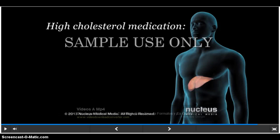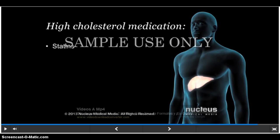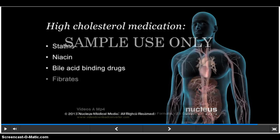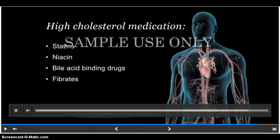If lifestyle changes can't reduce your cholesterol levels enough, your doctor may prescribe certain medications. Statins are drugs that reduce the amount of cholesterol made in your liver; they affect LDL levels more than HDL or triglyceride levels. Niacin reduces LDL cholesterol and triglycerides and increases HDL cholesterol. Bile acid binding resins are drugs that prevent the reuse of bile after helping to digest your food; as a result, your liver uses more cholesterol to replace the lost bile, which means less cholesterol in your bloodstream. Fibrates are mainly used to reduce triglyceride levels in your blood, but they can also raise HDL levels.